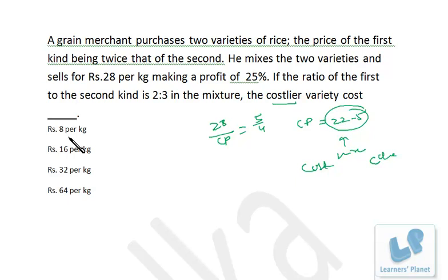See, costlier variety if it is 8 per kilogram, it is not possible because even the mixture is 22.4 rupees per kilogram, so costlier variety must be more than this - wrong. 16, costlier variety should be more than 22.4, so even this is wrong.